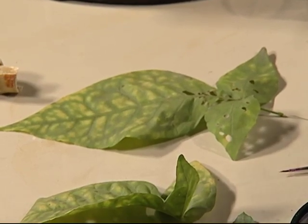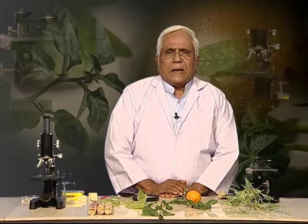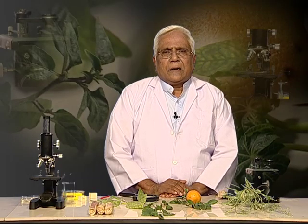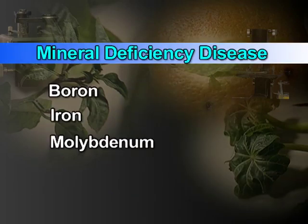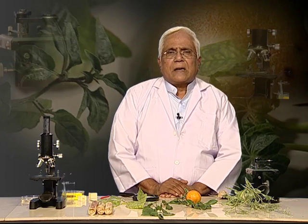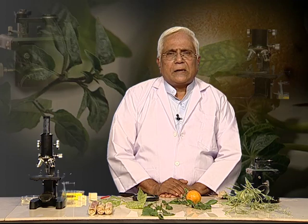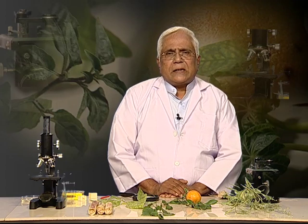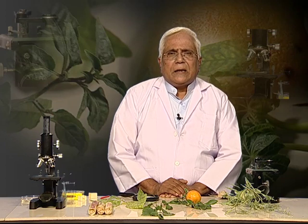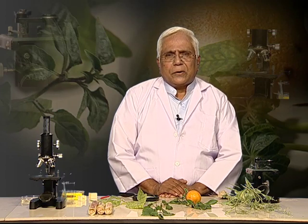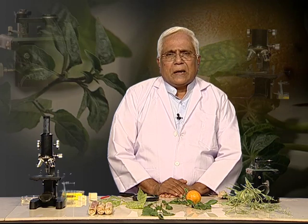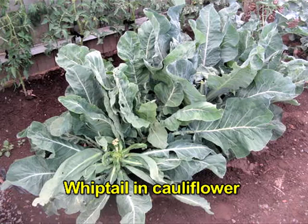In addition to diseases caused by pathogens, deficiencies of minerals also lead to diseases. Three examples are boron, iron, and molybdenum. Boron is essential for transport of carbohydrates — if boron is not available, the buds die back. Iron deficiency leads to yellowing of the leaves or chlorosis because iron is essential for synthesis of chlorophyll. Molybdenum is required for nitrogen metabolism, and in its absence there is an effect on nitrogen metabolism; an example is whiptail disease in cauliflower.